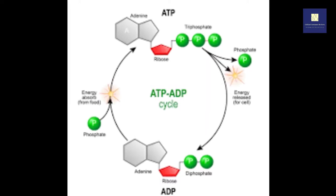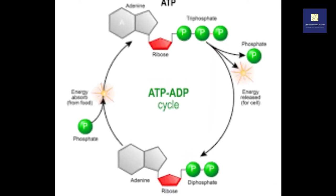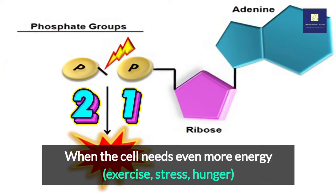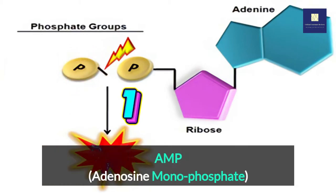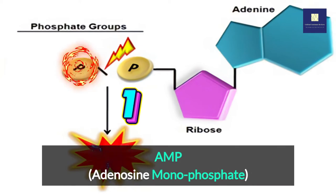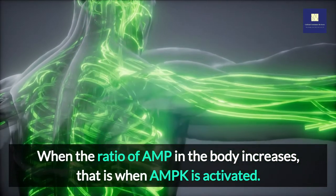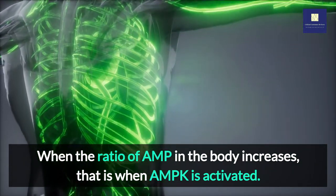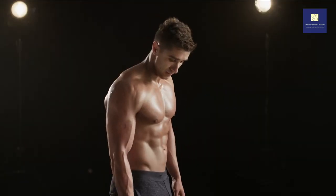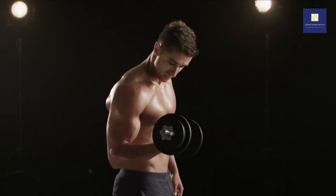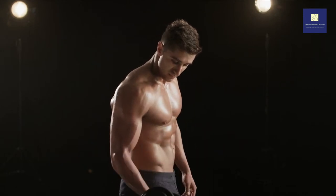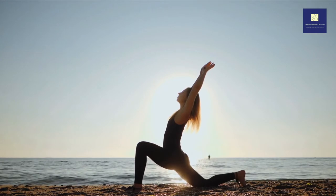Normally, this is the ATP-ADP cycle. But when the cell needs even more energy — e.g., exercise, stress, hunger — it splits off another phosphate, going from ADP, adenosine diphosphate, to AMP, adenosine monophosphate. When the ratio of AMP in the body increases, that is when AMPK is activated to help restore balance to our cells. Although its primary role is in energy metabolism, it is becoming more clear that AMPK has even more benefits at the cellular level.